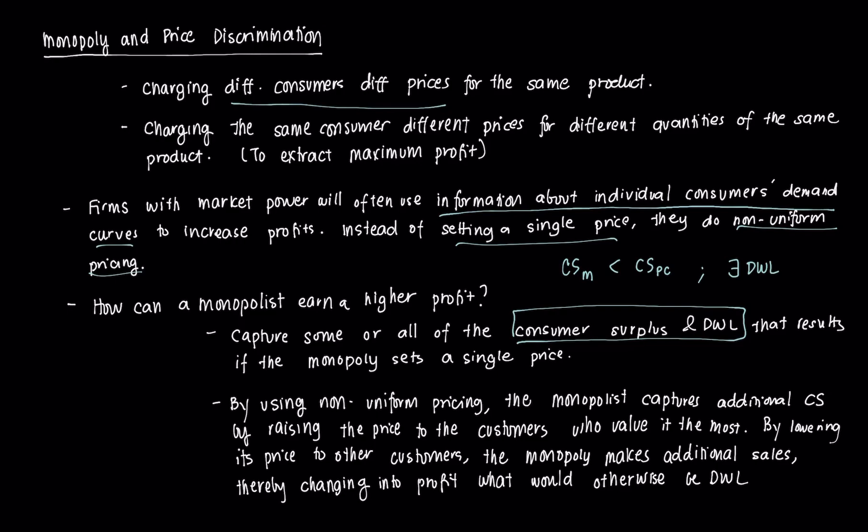But in that case, those consumers that the monopolist were able to sell to using that single price were able to retain some consumer surplus, because some of them were even willing to pay more than what the monopolist actually charged. And the monopolist loses sales to other customers who value the good less than the single price. So there are also consumers who want the good but can't pay for the good. And essentially, those lost sales are part of the deadweight loss.